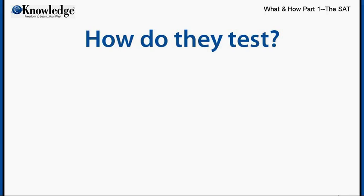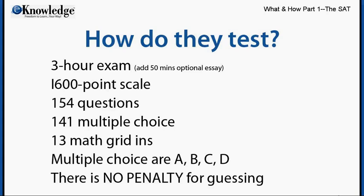Now let's take a very high-level overview look at how they test the SAT. First and foremost, the SAT is a timed three-hour exam with three mandatory graded sections. The essay is optional and adds about 50 more minutes. The SAT is now graded on a 1600-point scale. It has a total of 154 questions — 141 of them are multiple choice with choices A, B, C, and D. They dropped the fifth choice that they used to have. And 13 of those questions are what they call grid-ins, which appear on the math section only. Probably the biggest change on the SAT is that there is no longer a penalty for guessing, so guessing is mandatory if you don't know the answer. Never leave a question without an answer.